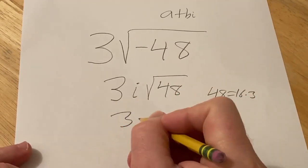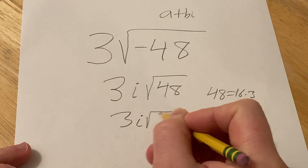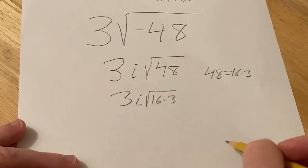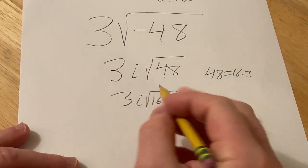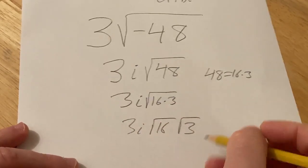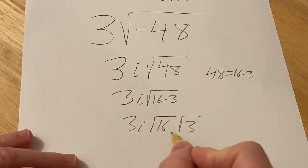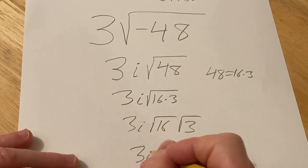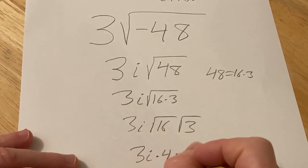So I'll show the step, it's actually 3i square root of 16 times 3. Okay then you can break it up into two square roots because they're both positive like this. And then the square root of 16 is 4. This is 3i times 4 times square root of 3.